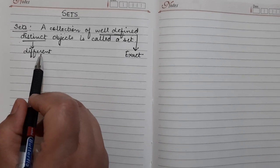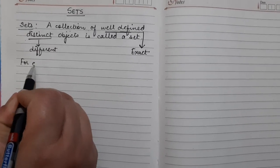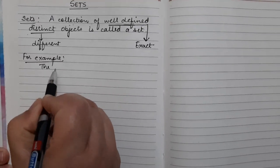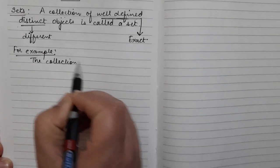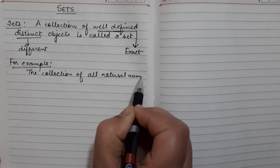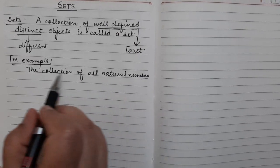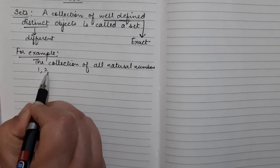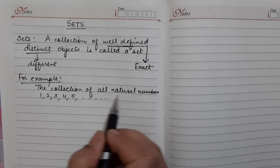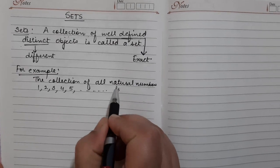The objects may all be different. For example, the collection of all natural numbers. We know that natural numbers start with 1, so the collection is 1, 2, 3, 4, 5 and so on. This collection is well-defined, so the collection of all natural numbers is a set.